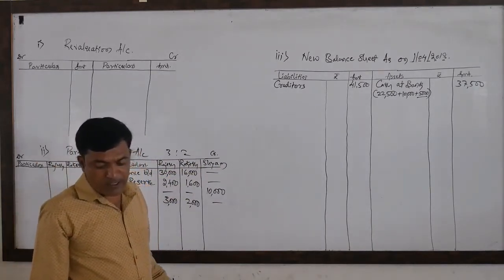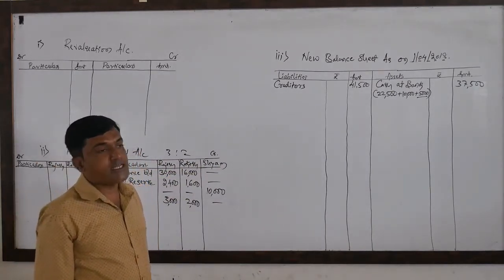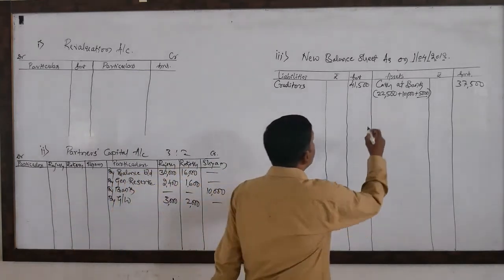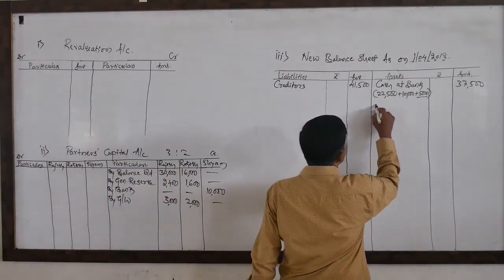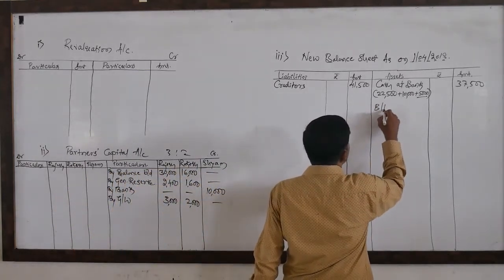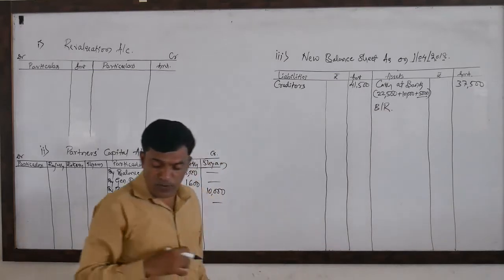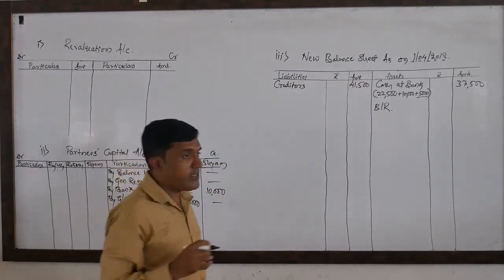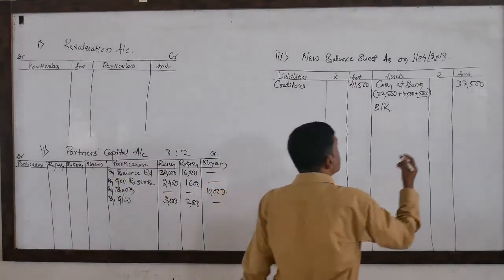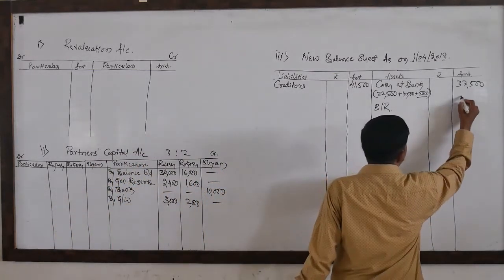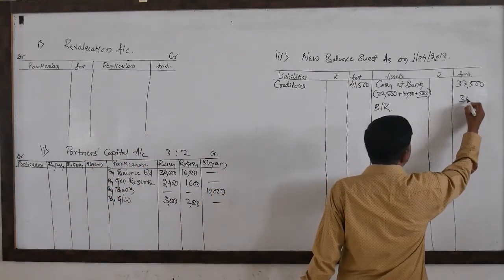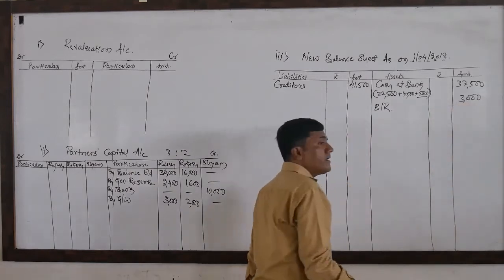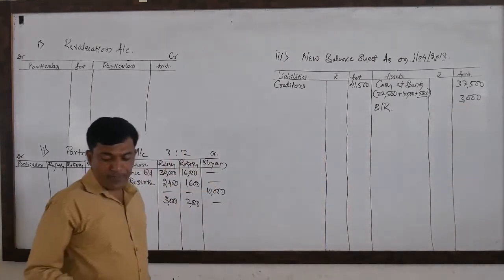Next, bills receivable — there is no adjustment for bills receivable. The amount of bills receivable is rupees 3,000. Since there is no adjustment, I am writing it on the outer column.